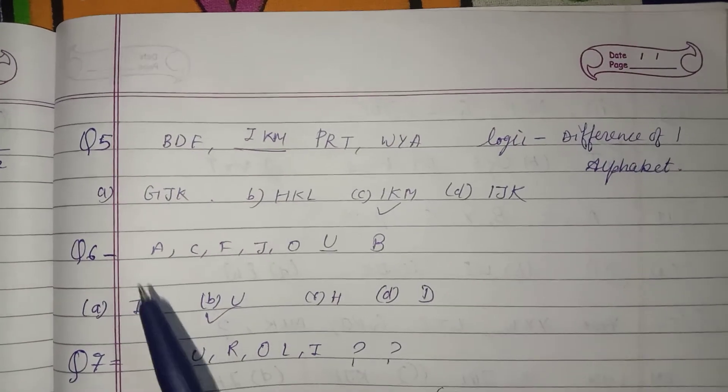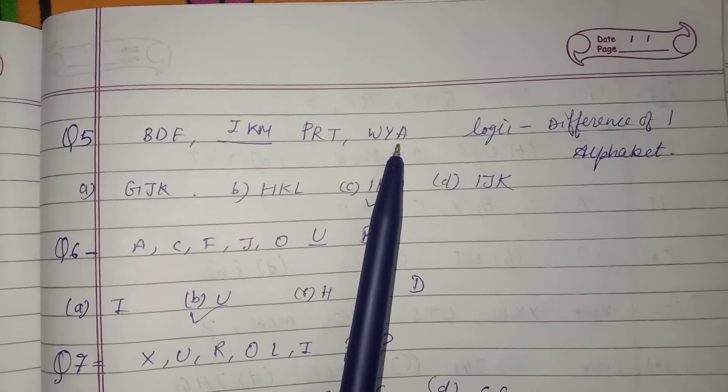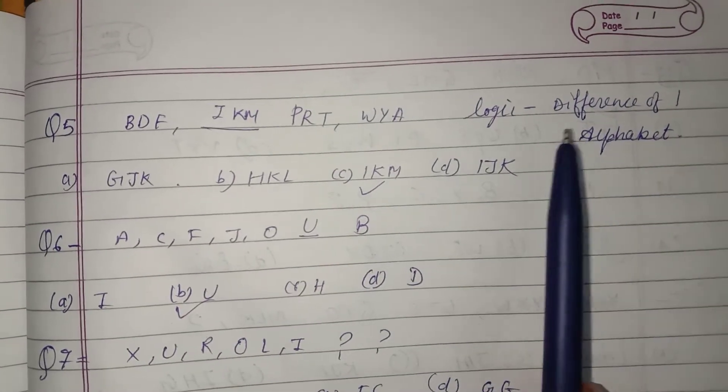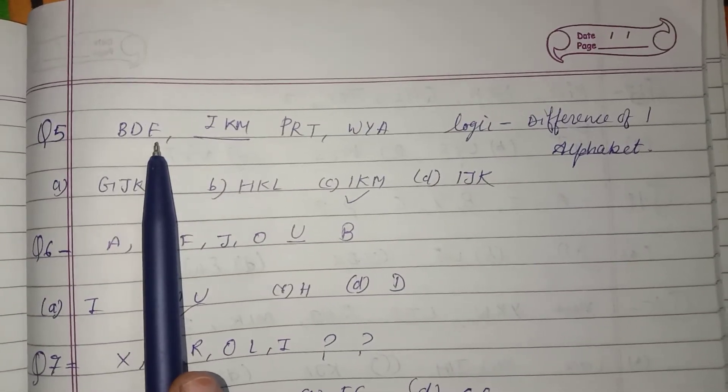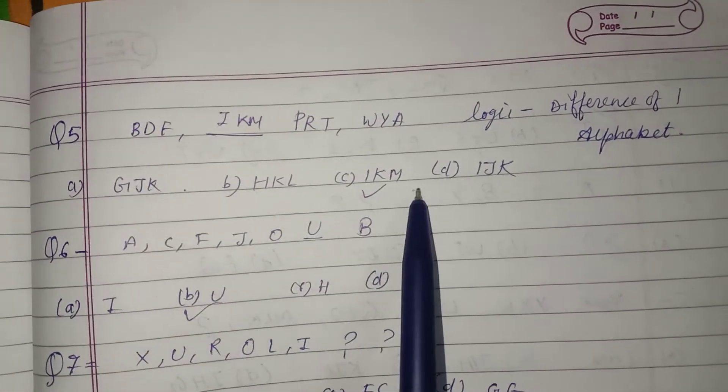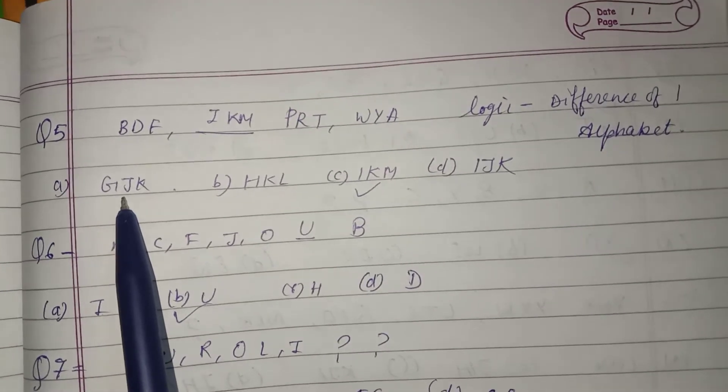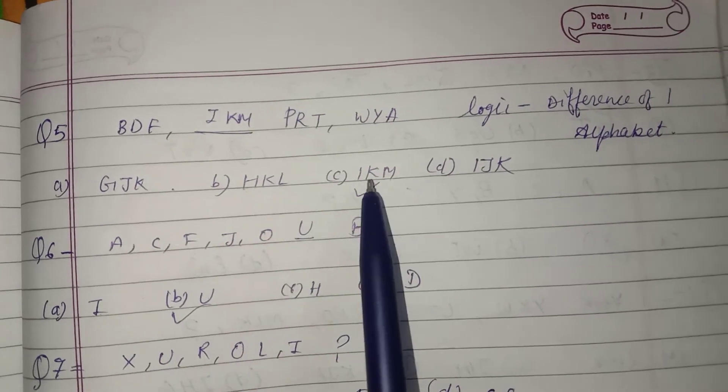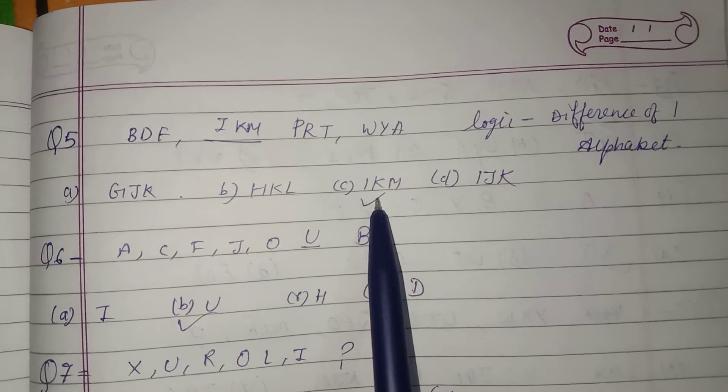Now question number 5: B, D, F, J, P, R, T, W, Y, A. There are options below. What does the logic look like? Difference of 1 is in alphabet. B, C, D, E, F, A is skipped. So in options, we have to see which option has 1 difference in alphabet. G, I has 2 differences. H, I, J has 2 differences. So I, J, K, L, M. This is the correct answer.